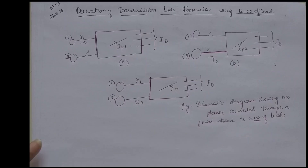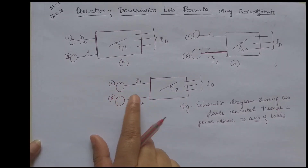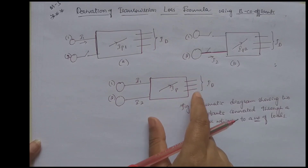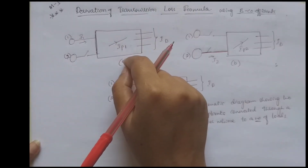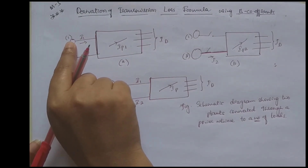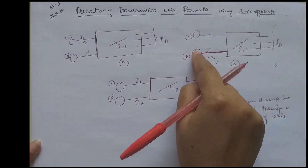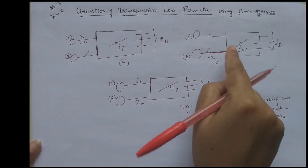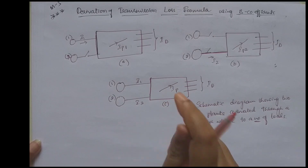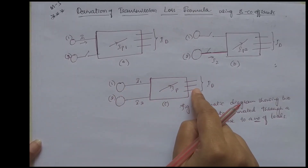Hello students, this is the next topic under module 3: derivation of transmission loss formula using beta coefficients. Here a schematic diagram shows two plants connected through a power network to a number of loads. In figure 1, plant 1 alone supplies the load; in figure 2, plant 2 alone supplies the load; and in figure C, both plants are supplying the demand.